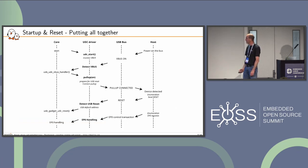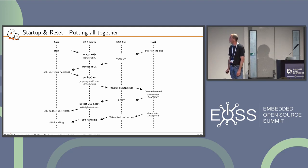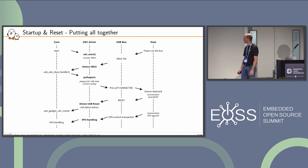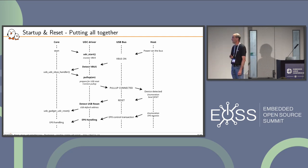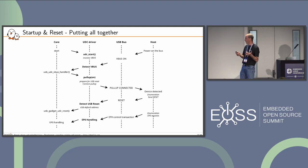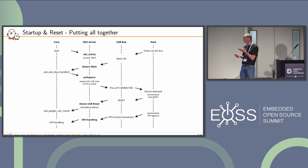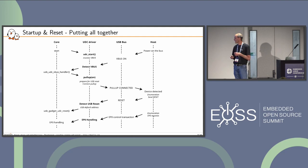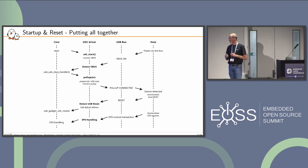Putting it all together: the core calls UDC start, we monitor VBus. The host powers on the bus — VBus is detected and signaled to the core via USB UDC VBus handler. The core calls pull-up, so we prepare for USB reset and connect the pull-up. The pull-up is detected by the host, which starts enumeration and sends a reset. We detect the reset, switch to the default address, and signal the reset to the core. The host continues enumeration, starting endpoint zero transactions with control transfers.